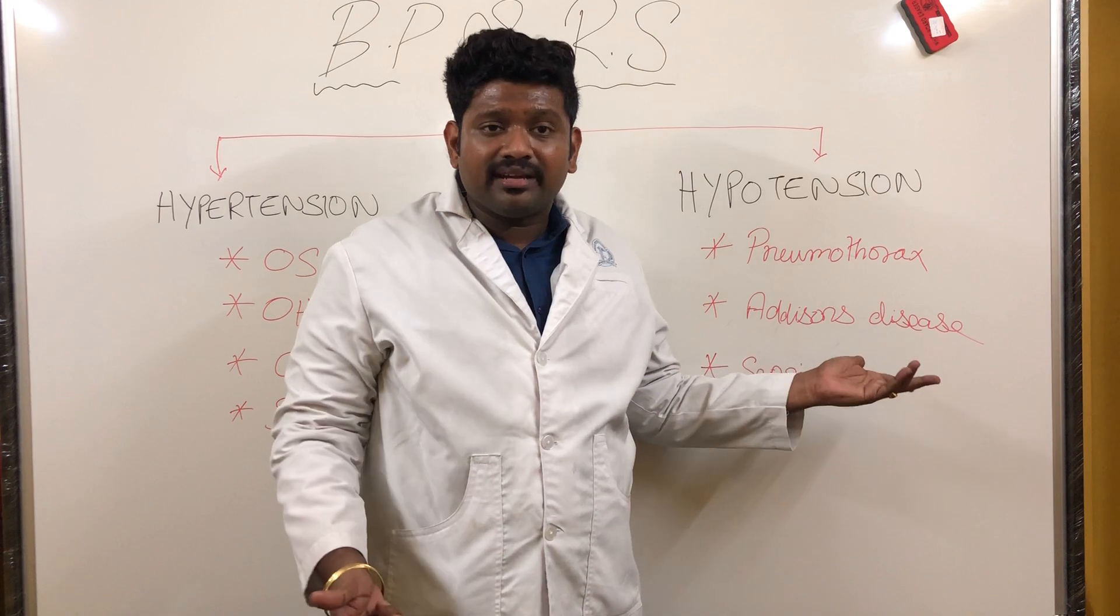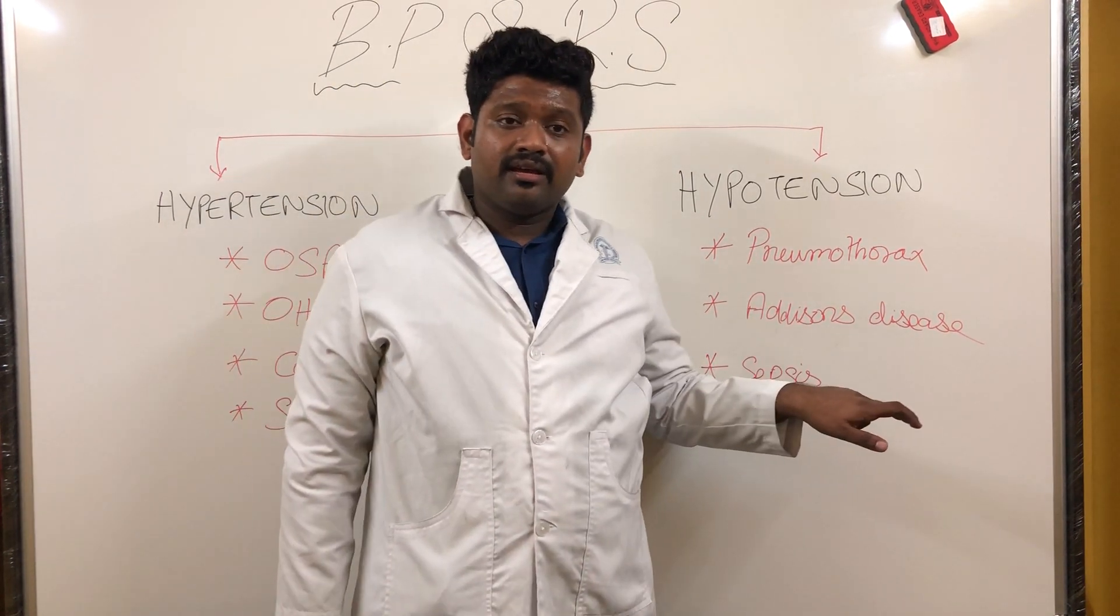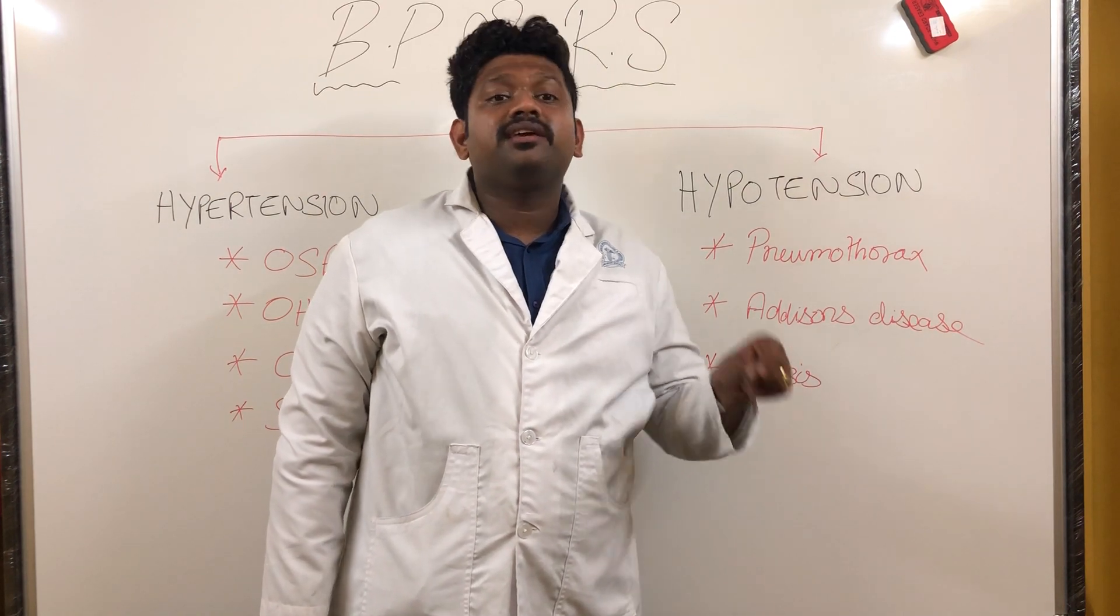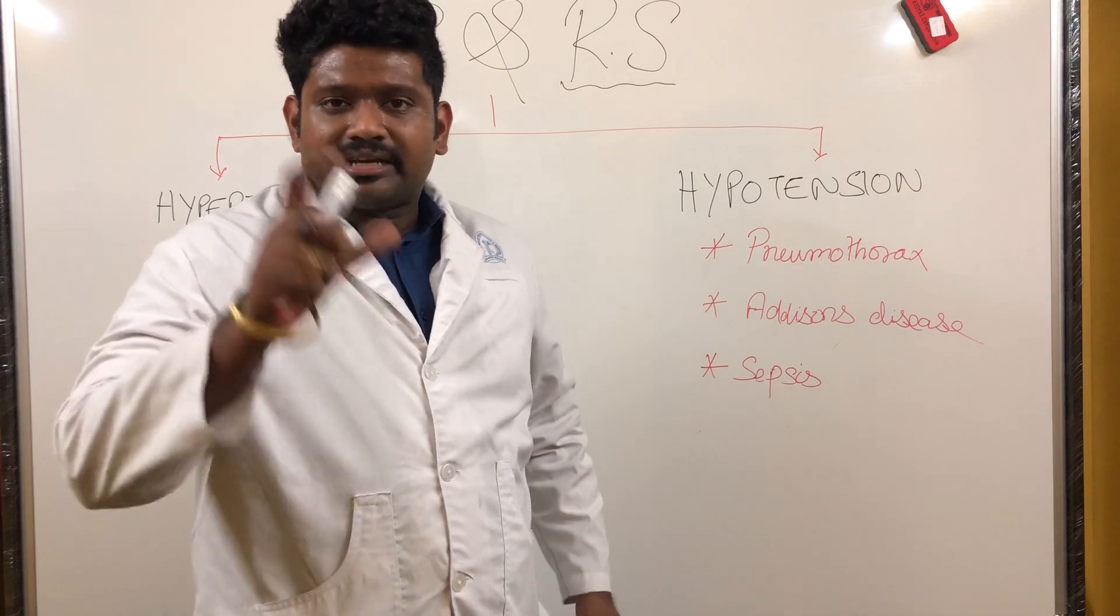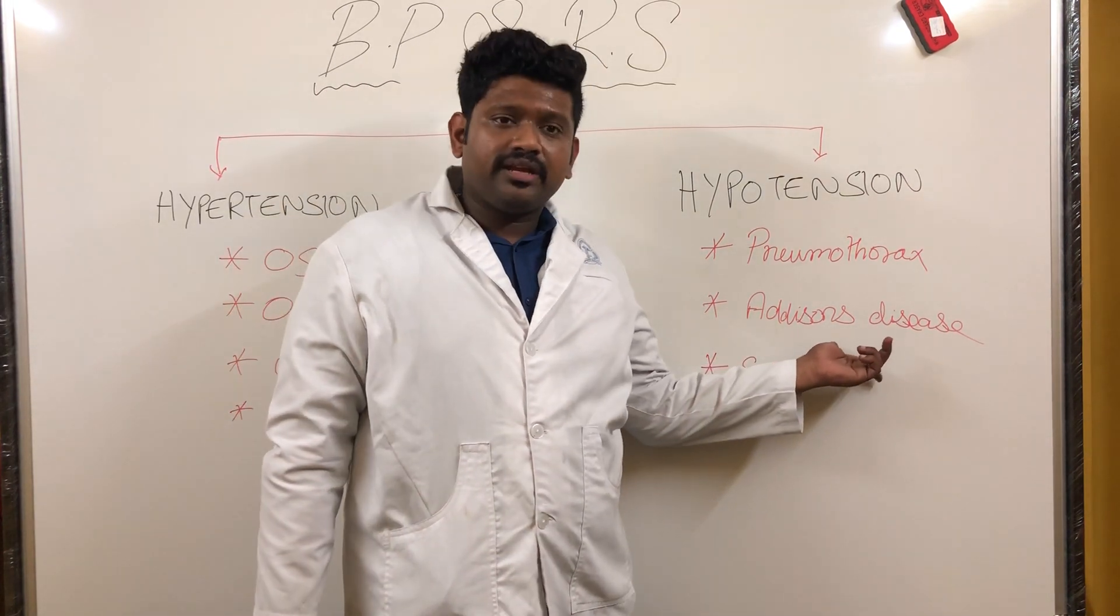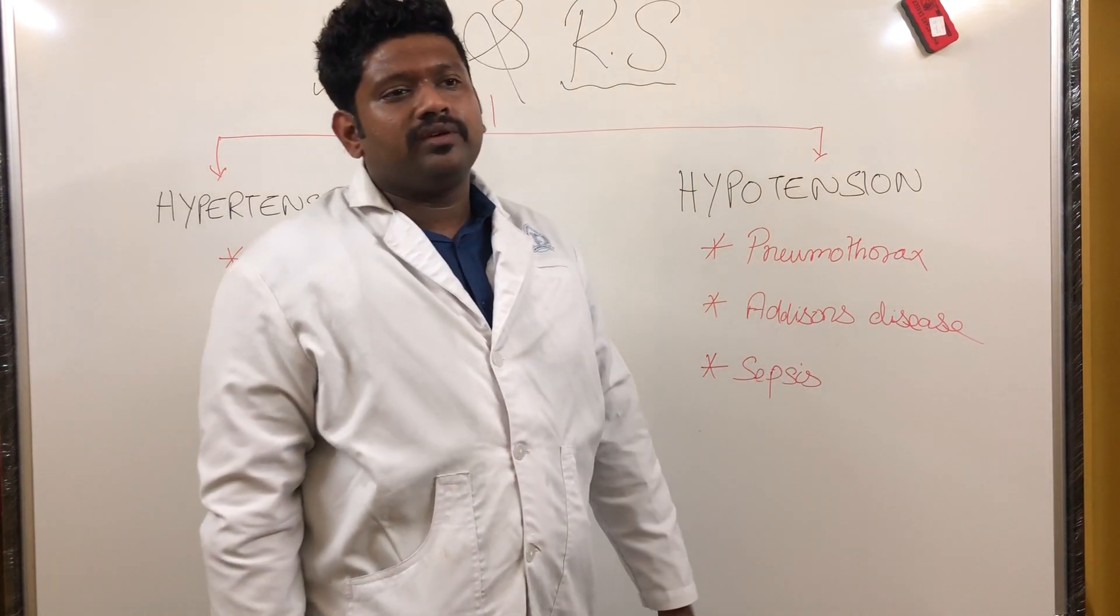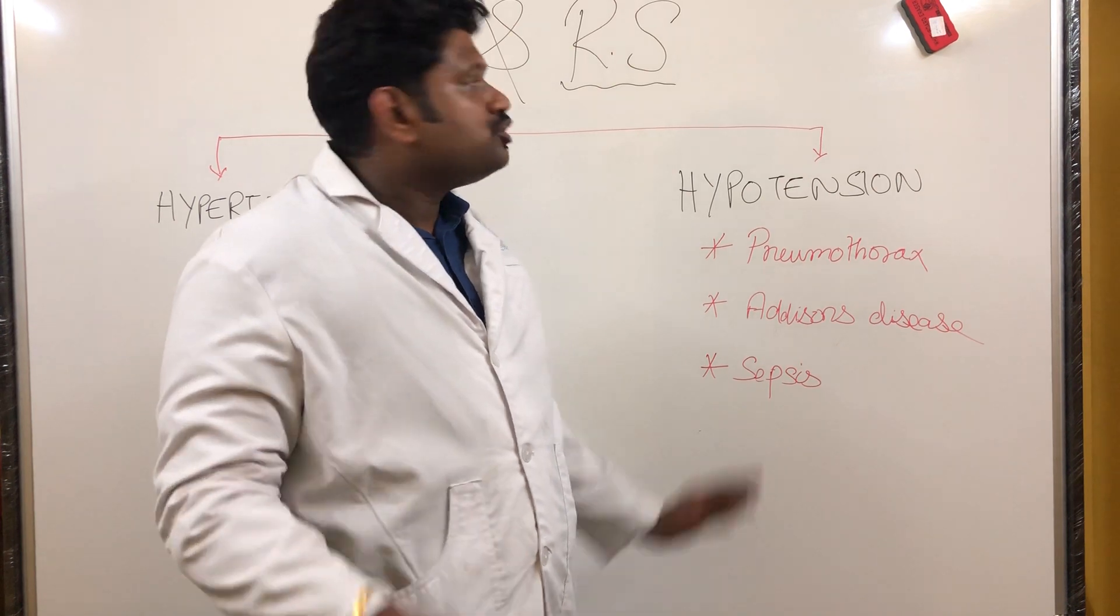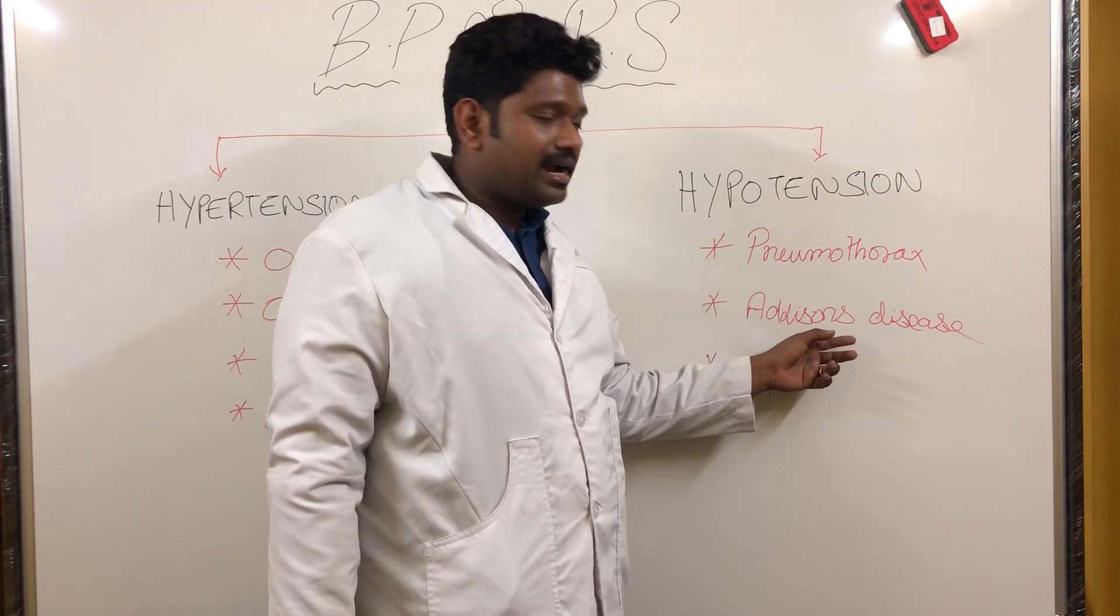Addison's can present with weakness and hypotension. It's one of the important indications in tuberculosis where we give steroids. We don't give steroids everywhere in TB, only in certain indications, which we'll discuss in later videos. One important indication for steroids in tuberculosis is Addison's disease. This patient will present with hypotension.